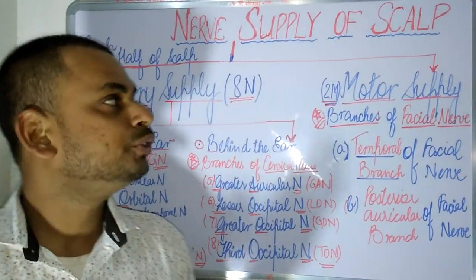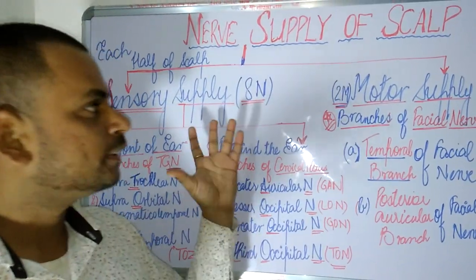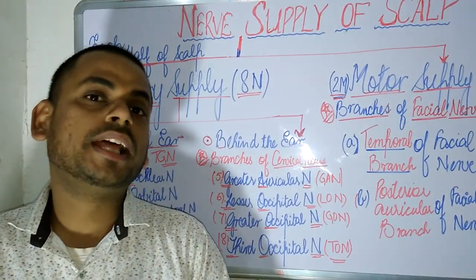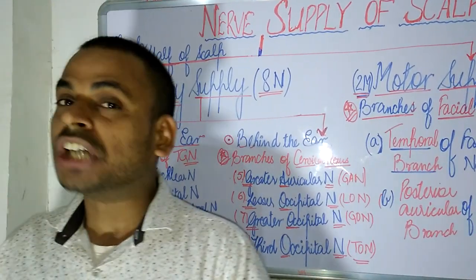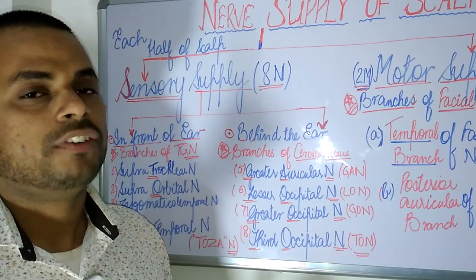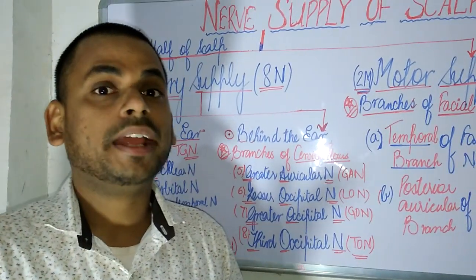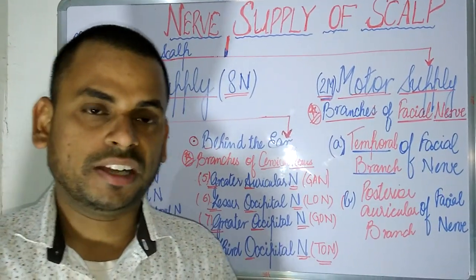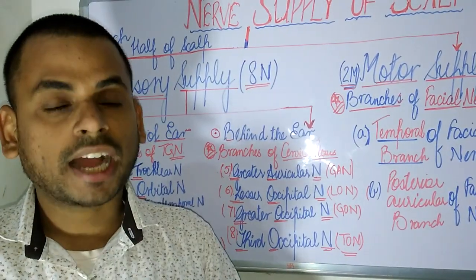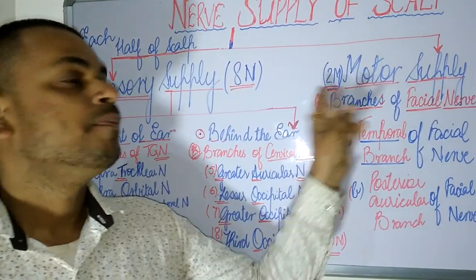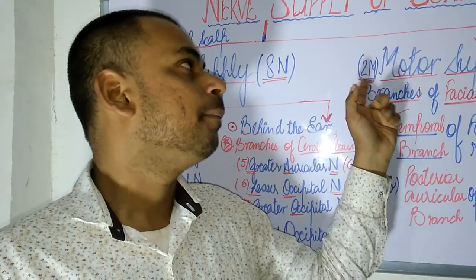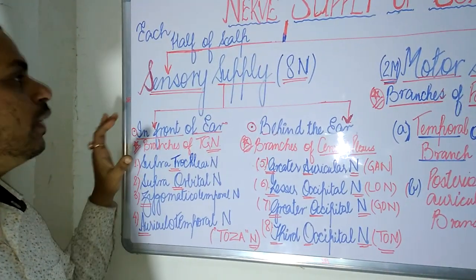The nerve supply of the scalp is divided into two broad categories: sensory supply and motor supply. Each half of the scalp is supplied by eight sensory nerves and two motor nerves. So the sensory supply comprises eight nerves and the motor supply comprises two nerves.